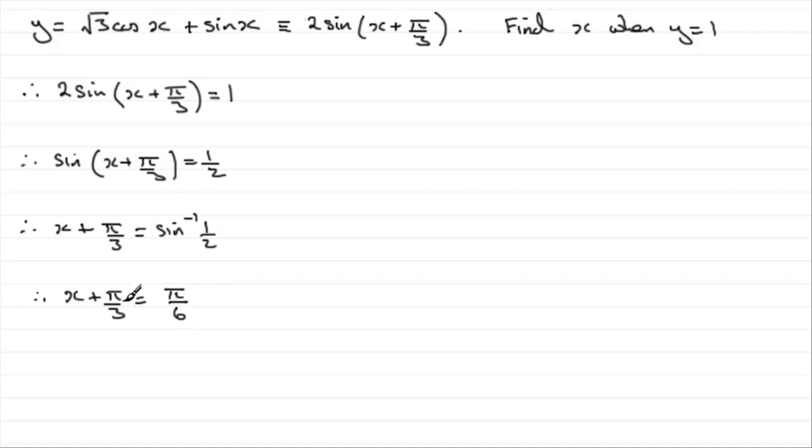Now, before we go on and just work out what x is by subtracting pi upon 3 from both sides, what you need to do is check out all the other possible solutions. And there's two ways that we can do this.